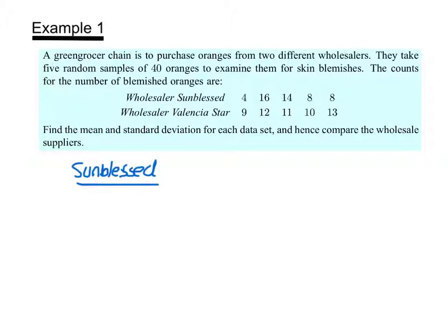So let's take a look at our first wholesaler Sunblessed. The first thing we're going to do is calculate the mean, which is x bar. And remember, that's just the sum of all the data values divided by the sample size. So if I were to add up these five numbers, I would get 50. And I divide by 5, which is the number of data points, I get 10. So our mean is 10 for Sunblessed.